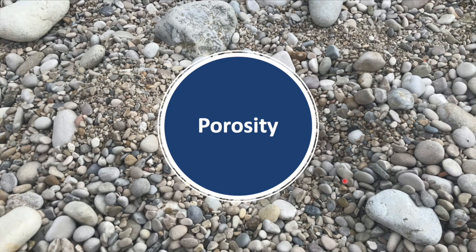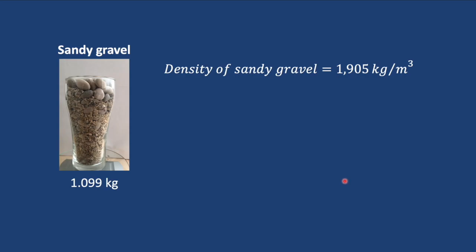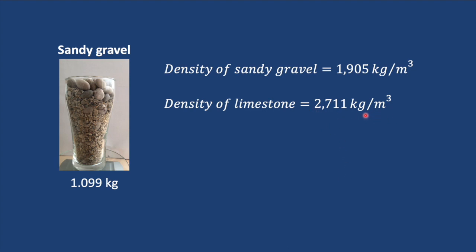We can estimate the porosity of the sandy gravel from its density. If we assume that limestone has a density of 2,711 kilograms per cubic meter, we can calculate the porosity assuming the sample is made mostly of limestone. A block of limestone with 0% porosity would weigh 2,711 kilograms per cubic meter. If the limestone had a porosity of 50%, its density would be 0.5 times 2,711, making 1,355.5 kilograms per cubic meter, assuming all void space is filled with air.